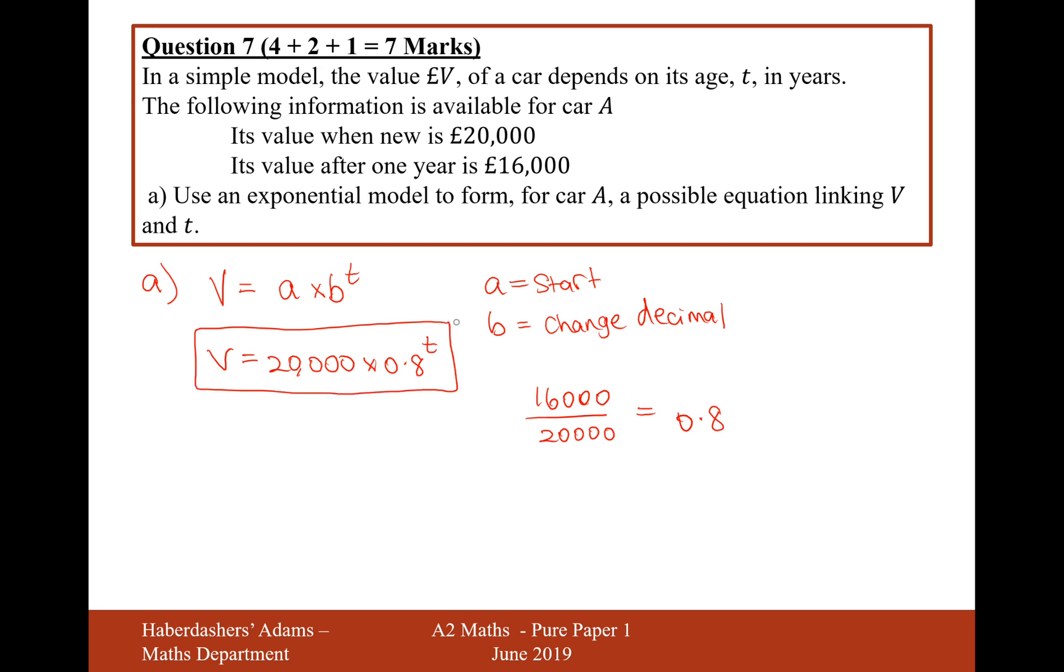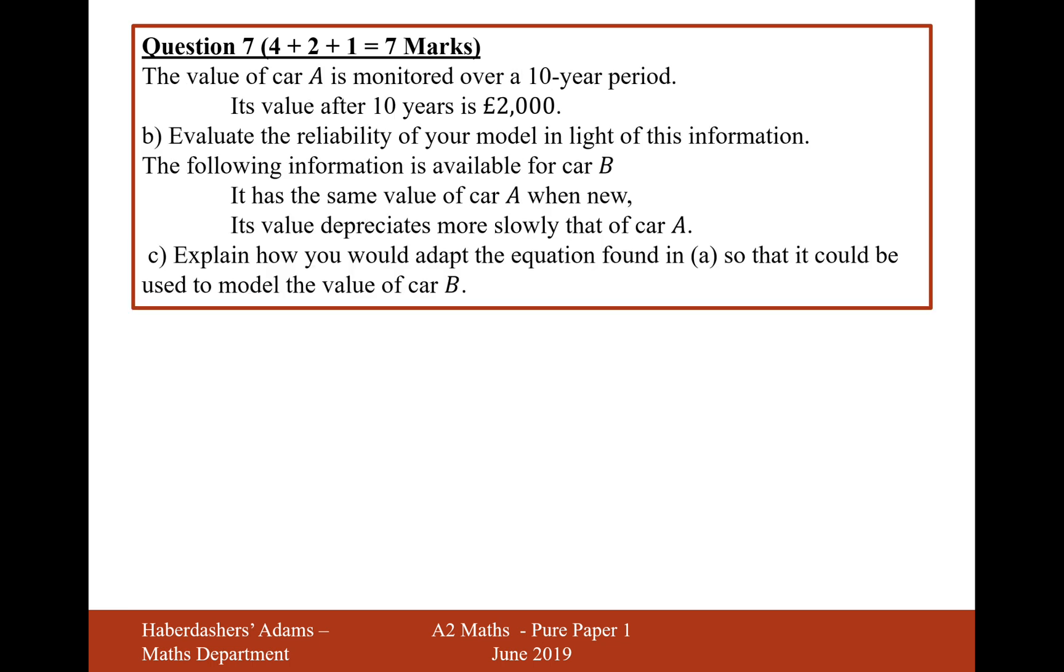You can check that by substituting in T equals 0 and T equals 1 into the equation, and you should get £20,000 out when you put 0 in and £16,000 out when you put 1 in. That's the answer for part A. Moving on to part B and C, I'm just going to write that answer up here: £20,000 times 0.8 to the power of T.